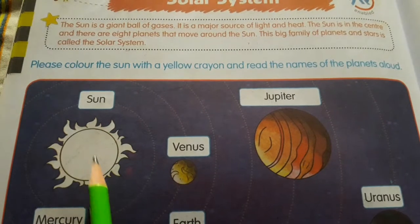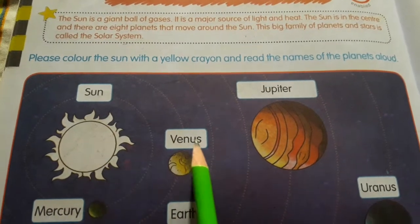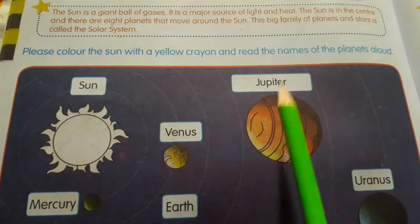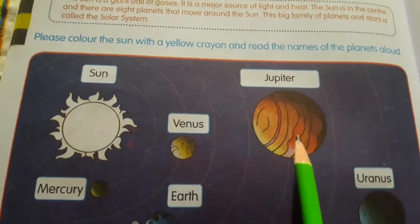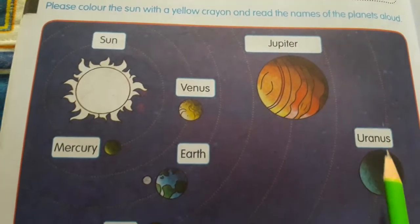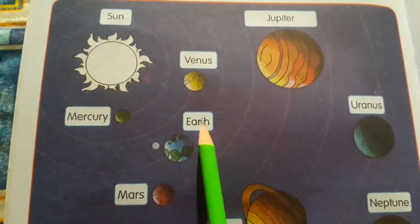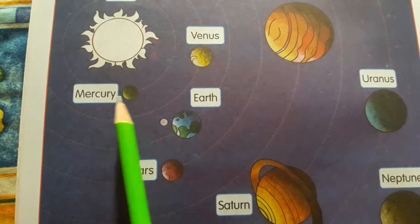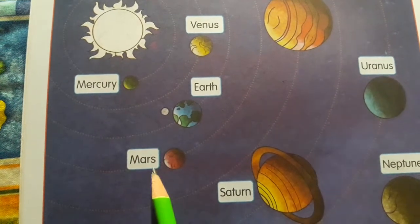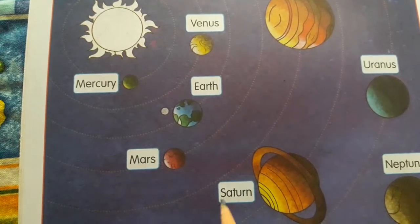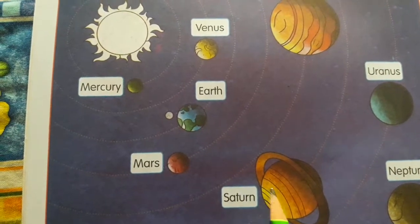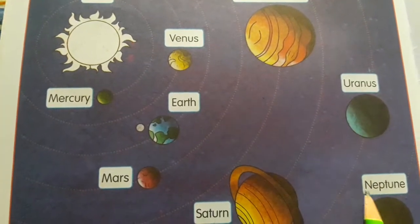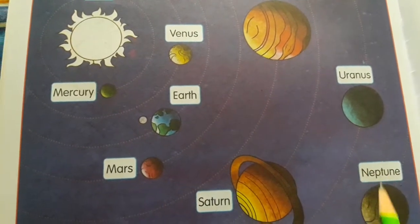Sab bachche mere piche repeat karenge. Sun, Mercury, Venus, Earth, Mars, Jupiter, Saturn, Uranus, Neptune.